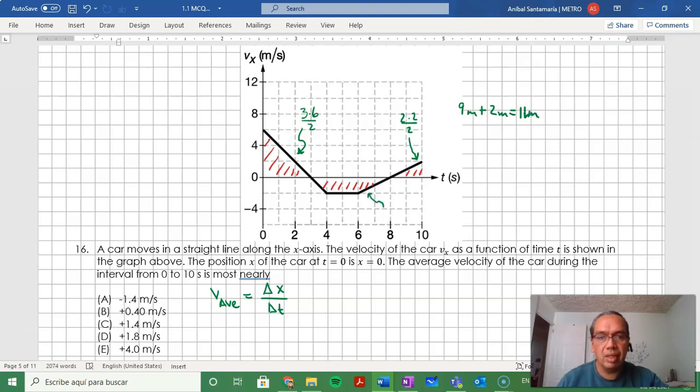On the other hand, the displacement over here is a trapezoid with bases 5 and 2 and height negative 2. So the displacement would be negative 7 meters, which means the total displacement is 4 meters.